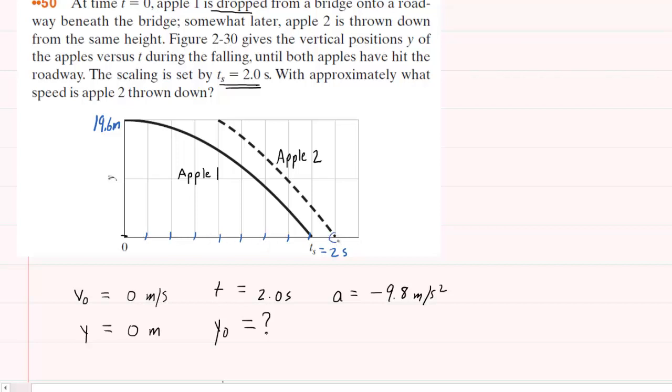That means that the time right here is going to be 2.25 seconds, and that turns out to be very important for us because it's going to help us find the length of time that Apple II is falling. Let's continue examining the graph.